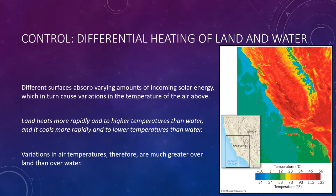The heating of Earth's surface directly influences the heating of the air above it. To understand variations in air temperature, we must understand the heating properties of different surfaces — soil, water, trees, ice, and so on. Different land surfaces absorb varying amounts of incoming solar radiation. However, the greatest contrast is not between different land surfaces, but between land and water. Land heats more rapidly and to higher temperatures than water, and it cools more rapidly and to lower temperatures than water. Variations in air temperature are therefore much greater over land than over water, as illustrated in this satellite image.